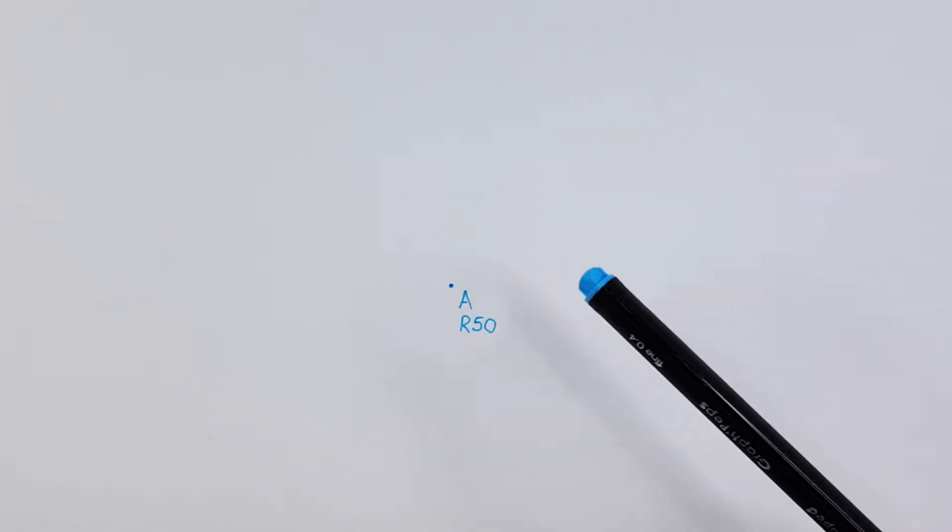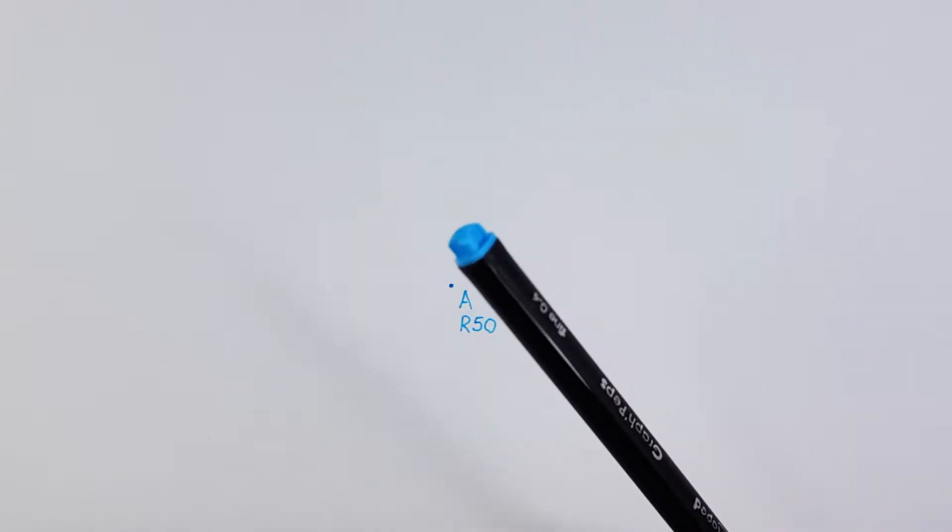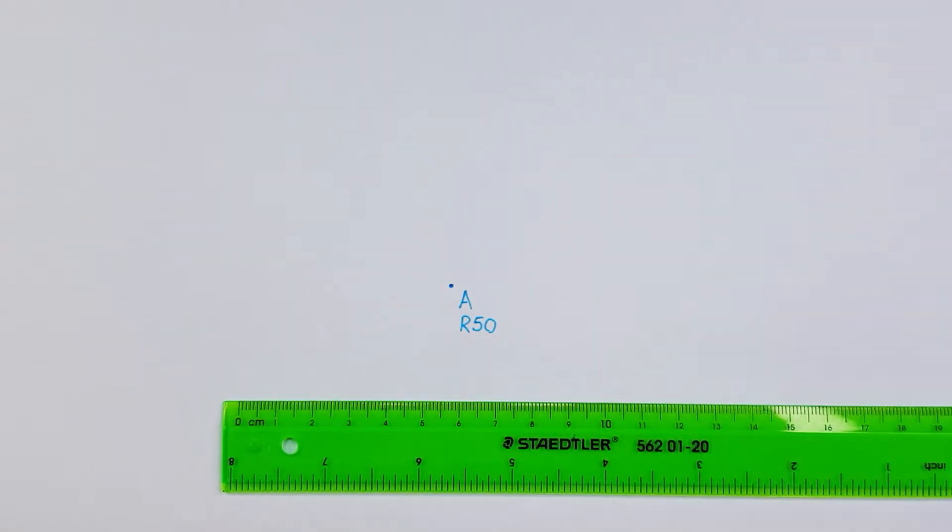Welcome to another EGD video. In this video, I'm going to show you how to construct a pentagon without a side length. For this example, we're going to use the radius of 50 on point A, and as always, a blue pen to show the construction lines.